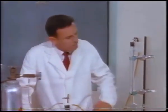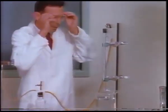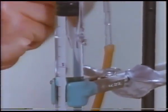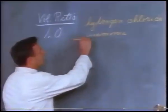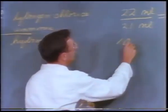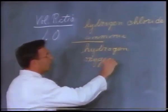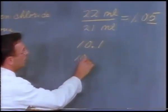This apparatus permits us to mix hydrogen and oxygen and study quantitatively how these gases combine. When we loosen this clamp, hydrogen enters the tube. The scale reading is 10.1. We'll add an equal volume of oxygen — the scale reading is 20.1. For oxygen, the final reading was 20.1, the initial reading 10.1, giving a difference of 10.0.